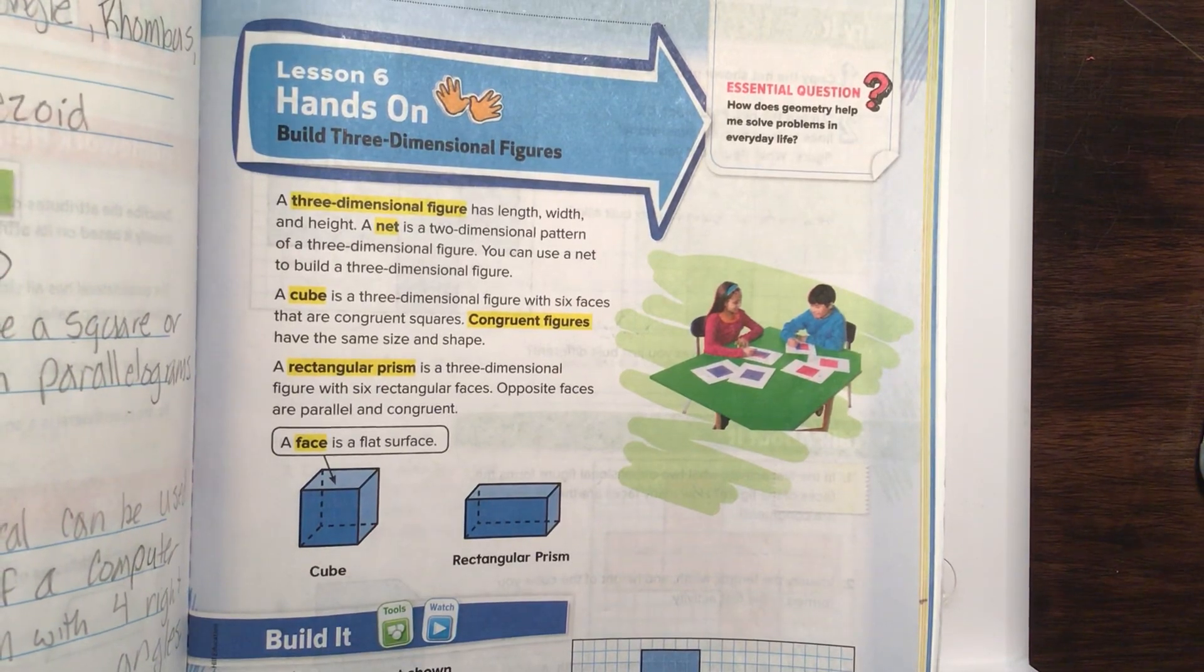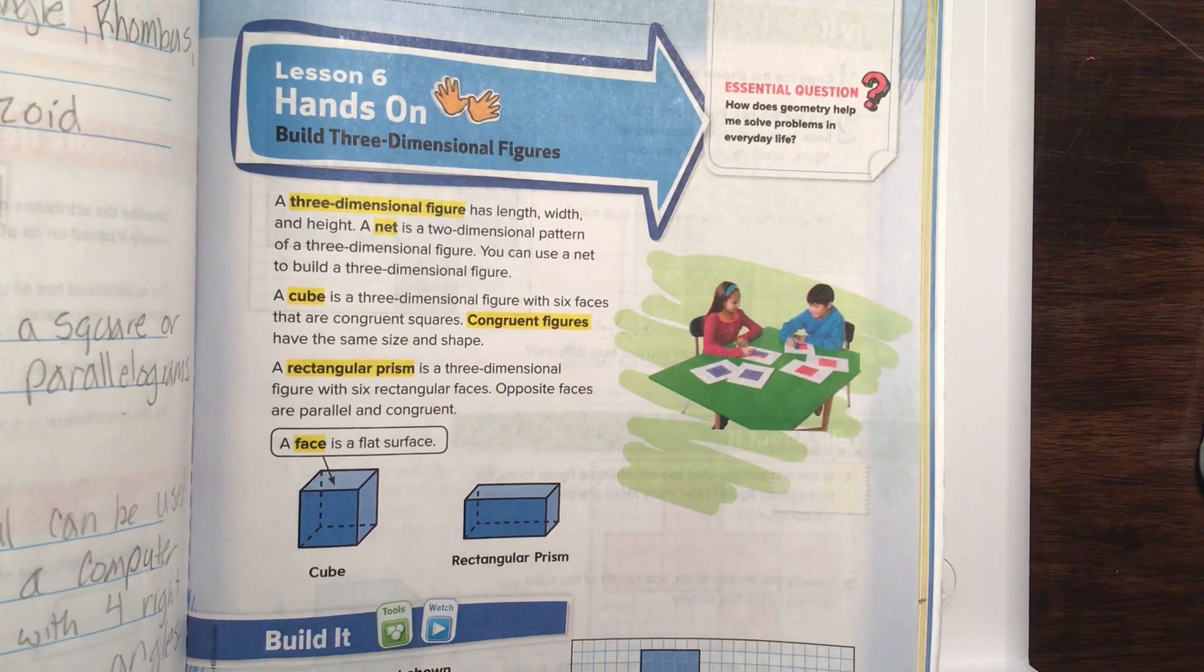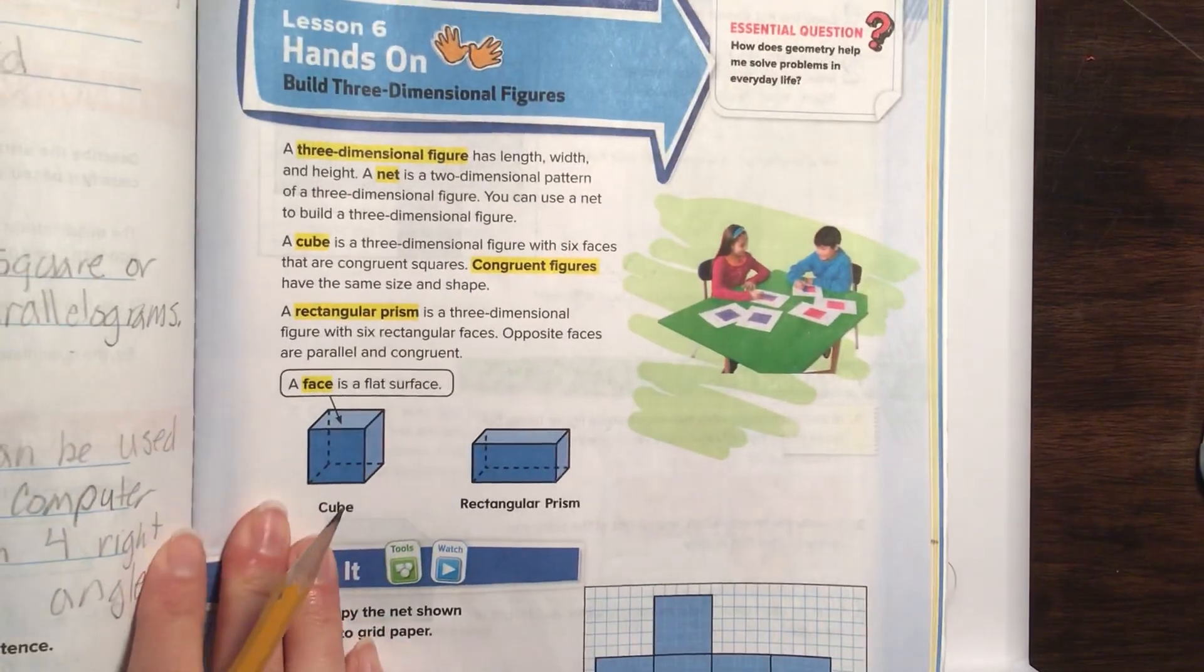Hello, this is Math with Mrs. Cox. We are working on Chapter 12, Lesson 6. It is on page 935 in your math book. Let's begin.